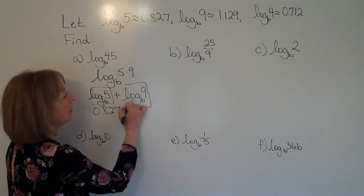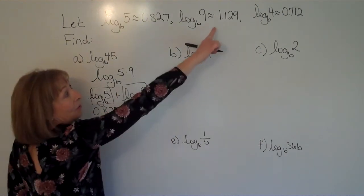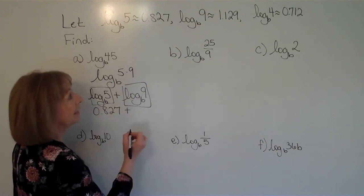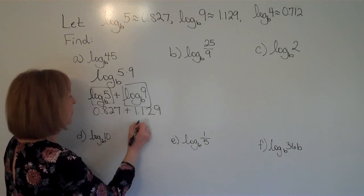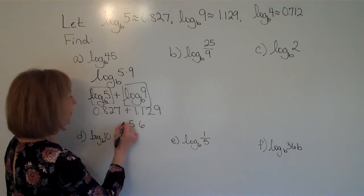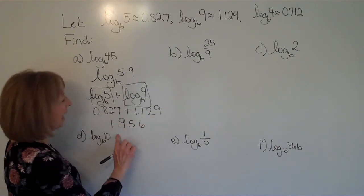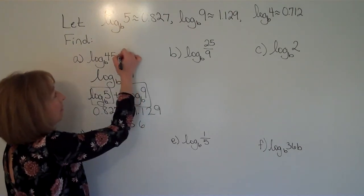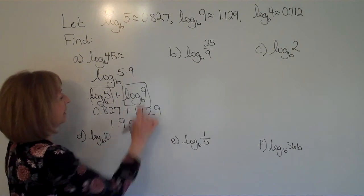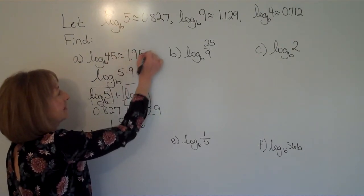Plus, the log base b of 9 is another one of the values that I know. It's 1.129. And so when I add these together, I get 1.956. So that's what my log base b of 45 is, is 1.956.